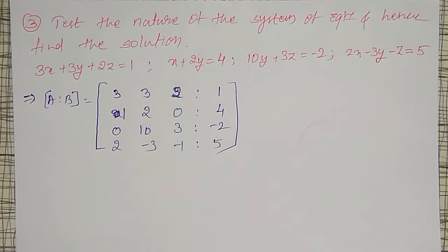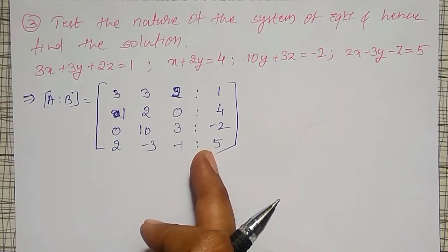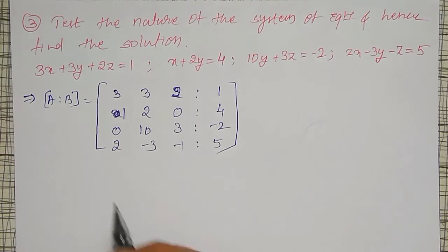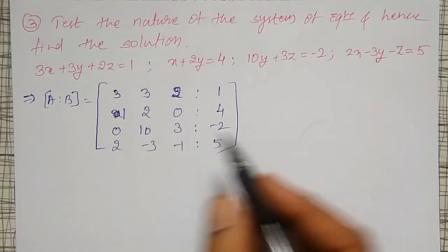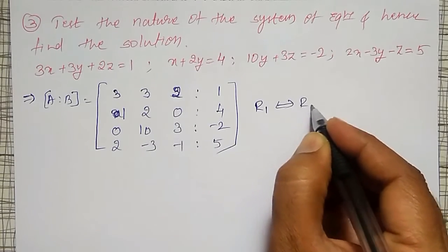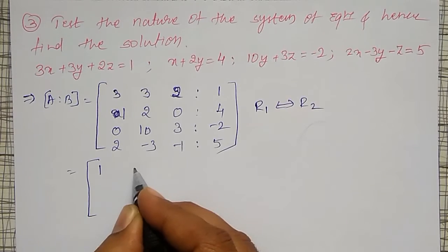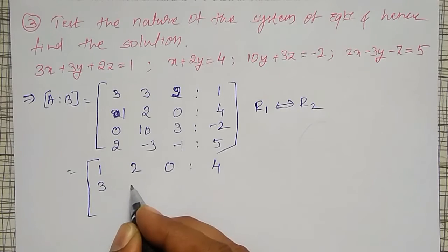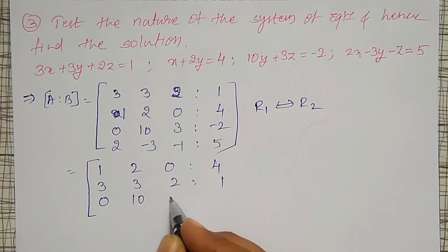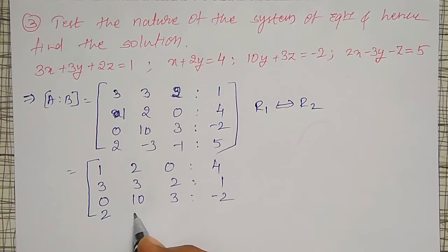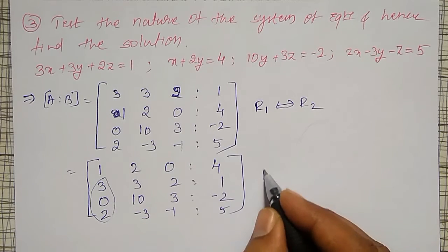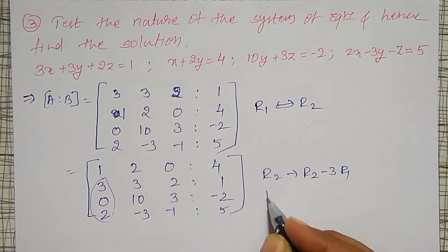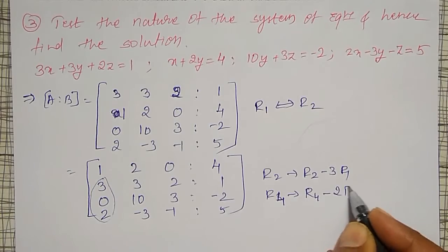To test the nature of this system, I have to find the rank of both A as well as the augmented matrix. To do that, I have to make the lower diagonal elements 0. Since the first element of the first row should be 1 for easy reduction, I will replace R1 with R2. Then I get: row 1 as 1, 2, 0, 4; row 2 as 3, 3, 2, 1; row 3 as 0, 10, 3, minus 2; row 4 as 2, minus 3, minus 1, 5. I have to make these three elements 0. R2 is replaced by R2 minus 3 times R1, and R4 is replaced by R4 minus 2 times R1.